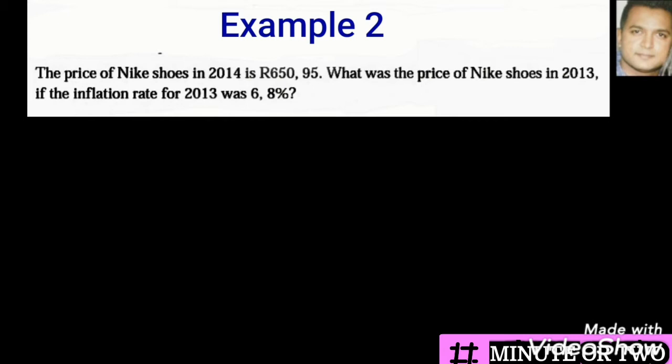Example 2: The price of Nike shoes in 2014 is R650.95. What is the price of the Nike shoes in 2013 if the inflation rate for 2013 was 6.8%? We need to determine what has been given to us. The new price of the shoes is given to us and the inflation rate is given to us. What we need to determine is the old price, so we need to know which approach to use.